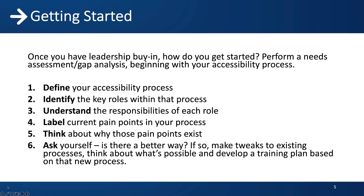Once you have leadership buy-in, perform a training needs assessment — a study of the gap between where you want to be and where you are now. If you already have a training program, now might be a good time to do a gap analysis. To develop one, you first need to define your accessibility process. Everyone is responsible for helping produce accessible content. A well thought out process for integrating accessibility into your content creation and development processes will help you develop with accessibility in mind, prevent issues, and help you create your role-based learning paths.